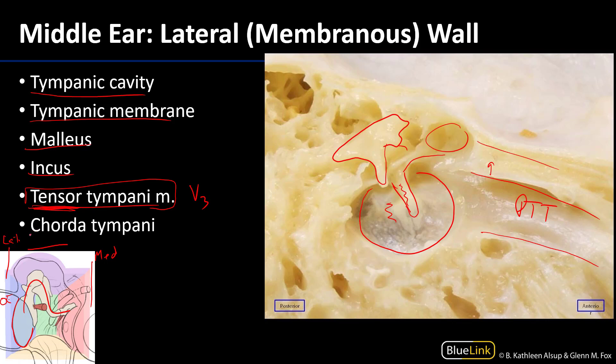There's also a nerve here — chorda tympani — and this is a classic anatomical relationship. The facial nerve, cranial nerve 7, enters the internal acoustic meatus with cranial nerve 8, the vestibulocochlear nerve, then enters the facial canal of the temporal bone. This is the longest osseous canal containing a nerve in the skull. One of the branches the facial nerve gives off is chorda tympani, which traverses the tympanic cavity running between the malleus and the incus.